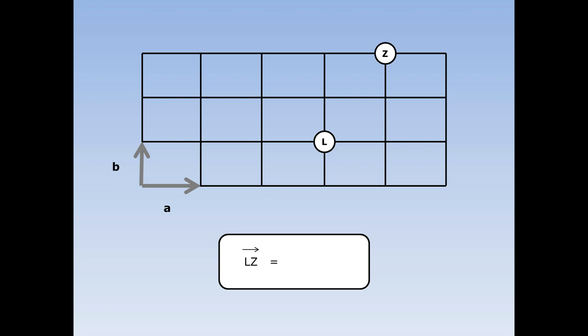How do I get from the lake to the zoo? I need to go along one A road and up two B roads, so the answer is one A plus two B. Now I could have gone two up and then one across, or I could have done a zigzag. Whichever way I went, the answer would have been the same.